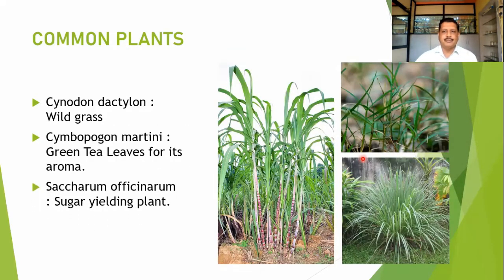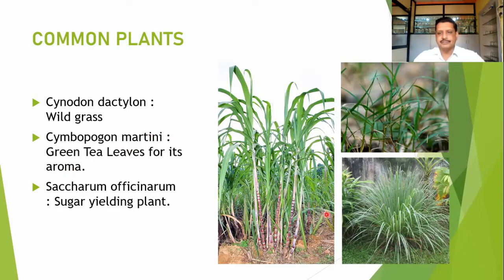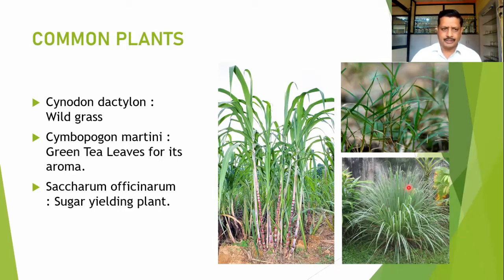Grasses found in our region include Cynodon dactylon, a wild grass also known as durva or doob, which is offered to Lord Ganesha. Cymbopogon martinii is planted in kitchen gardens and known for its aroma, used as lemongrass tea. Saccharum officinarum is mostly planted in our region for sugar production.